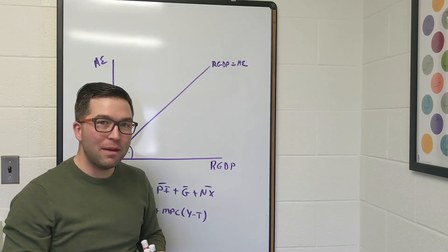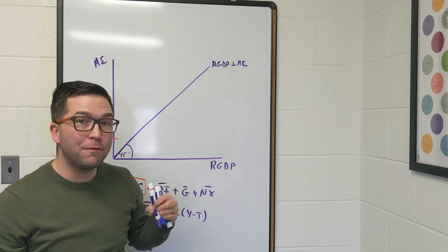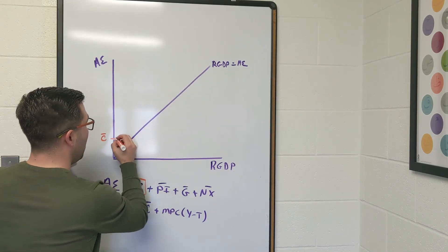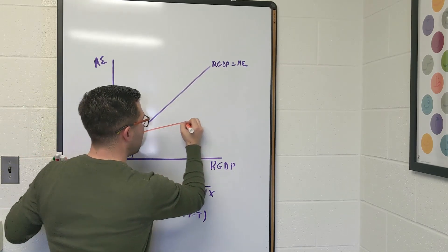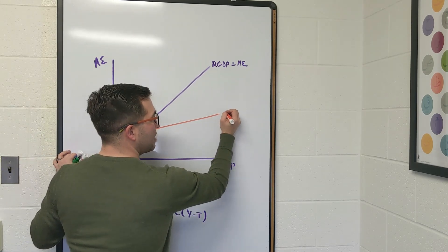The thing we know about MPC is that it's less than one. Therefore, the slope is going to be flatter than this 45-degree line. We can then graph the consumption function to look like this. Here's my consumption function.